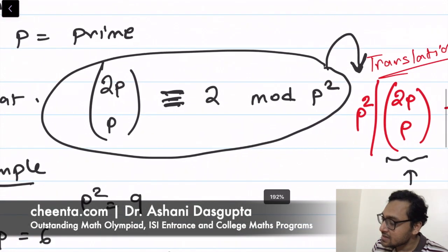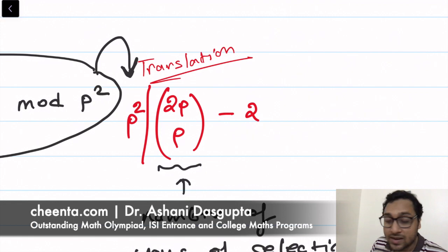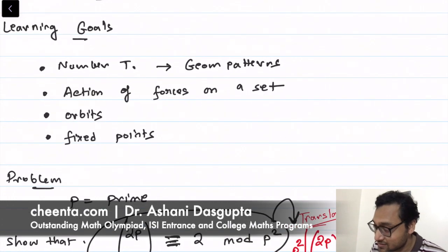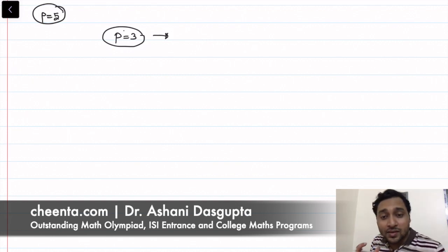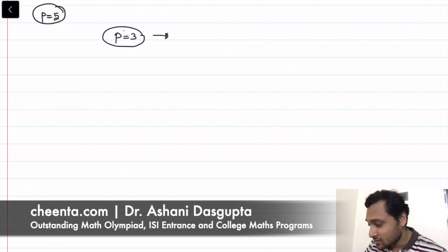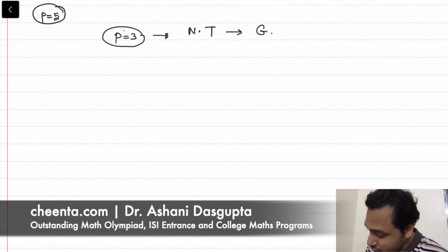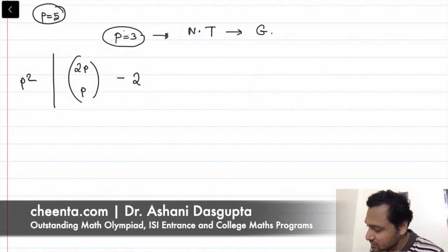Our goal is to show that 2p choose p is congruent to 2 mod p², or equivalently, p² divides (2p choose p) minus 2. The first step is to convert this number theory problem into a more geometric intuition — a journey from number theory to geometry.